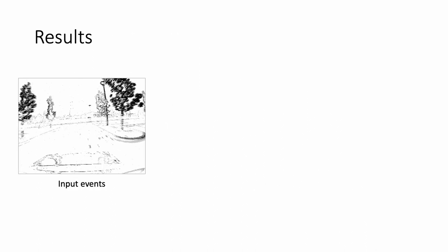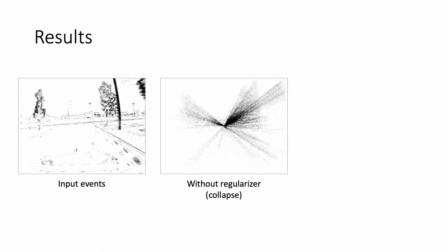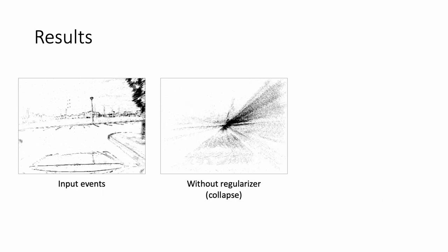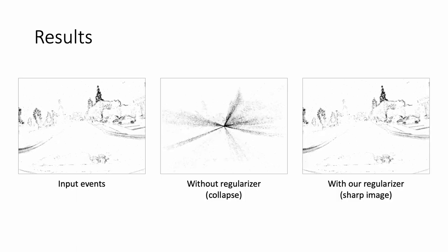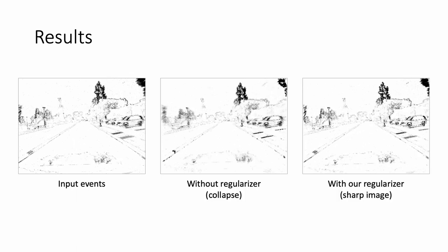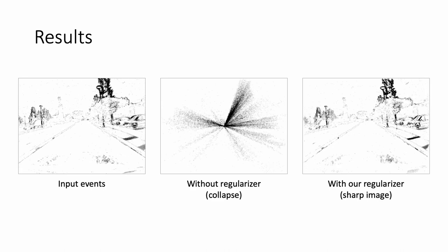Here are the example results on the MVSEC dataset. If there is no regularizer, contrast maximization framework overfits and event collapse happens. Our regularizer successfully alleviates event collapse, achieving high estimation accuracy without loss of additional runtime, providing a sharp image of warped events.